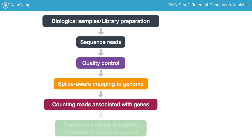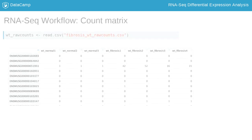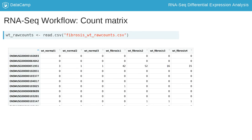Therefore, we will not perform these steps in the current course. This course will focus on the identification of differentially expressed genes using these count matrices as input. The analysis will be performed in R using predominantly Bioconductor packages. We can read into R the count matrix using the read.csv function, specifying the file. The gene count matrix is arranged with samples as columns and gene IDs as rows.